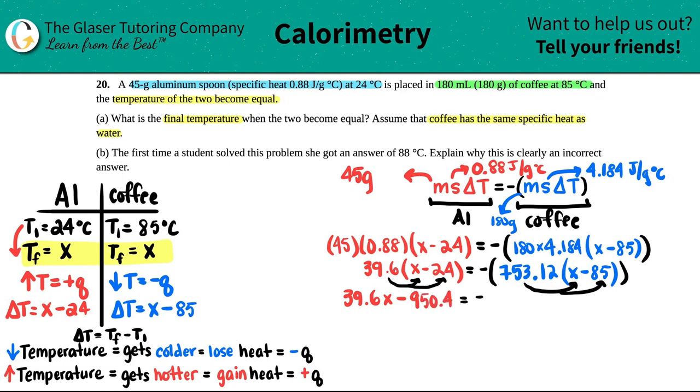753.12X minus this times 85—big number, don't be scared, write it down—we got 64015.2.